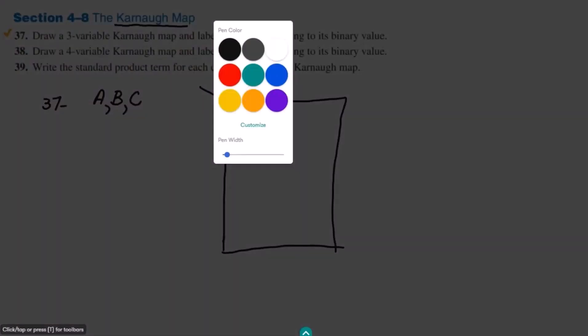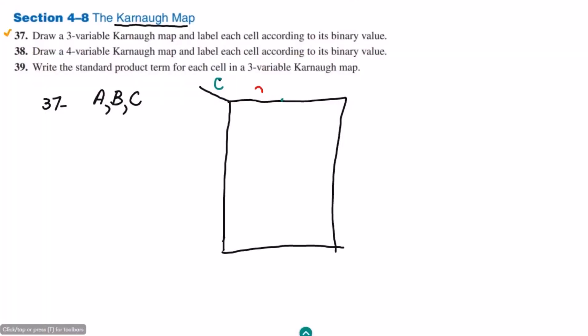C can have two values: zero and one. Similarly, along the other axis I write A and B, which are two variables, so they can have four values: 00, 01. Now, I cannot write 10 next because the difference between 01 and 10 would be two bits, but adjacent entries should differ by only one bit. So I write 11 and then 10.